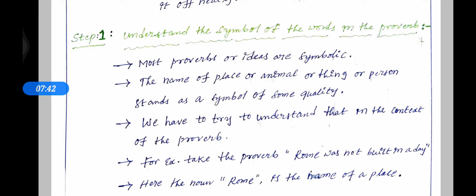The name of a place, animal, thing, or person stands as a symbol of some quality. We have to try to understand that in the context of the proverb. If we have the key words and symbolic meaning, we can understand the symbol of the words in the proverb. That is the first step.